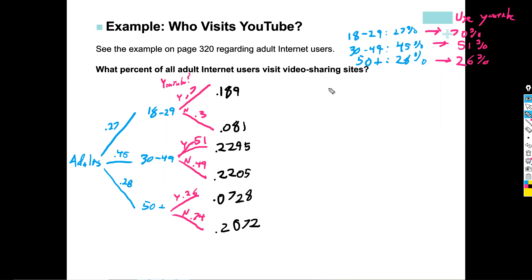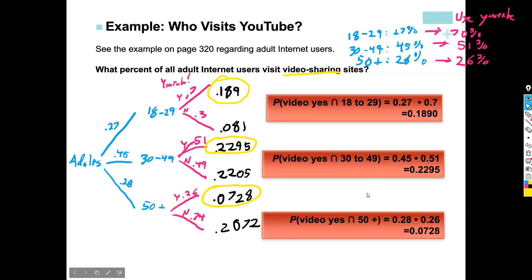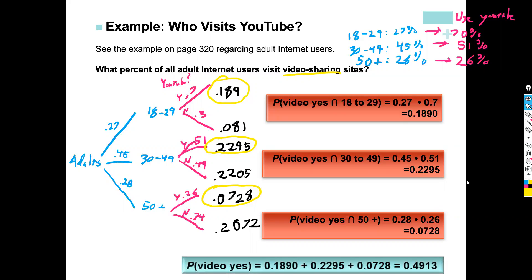We want to find the percent of internet users who visit video sharing sites. I look at the ends of the branches where the answer is yes — one from the 18–29 group, one from the 30–49 group, and one from the 50-and-over group. Since they could be in any of these three groups, we add those three probabilities together, giving a total of 0.4913 — so about 49.13 percent of adult internet users visit video sharing sites.